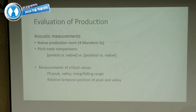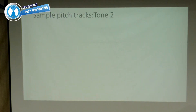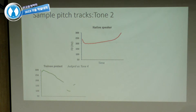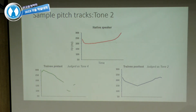We also did an acoustic analysis of productions, comparing trainee pitch tracks before and after training to a native norm. Here's an example for tone 2: a native speaker's pitch track, then a trainee's pre-training attempt which looked nothing like native tone 2 and was judged as tone 4 due to a rapid F0 drop. After training, the same trainee produced a tone 2 that looked much better and was correctly identified by judges as tone 2. Overall, post-training curves were closer to the native norm for each of the four tones.